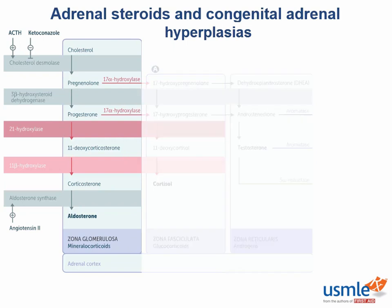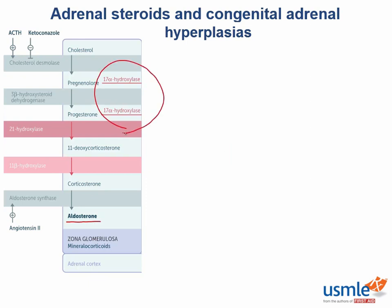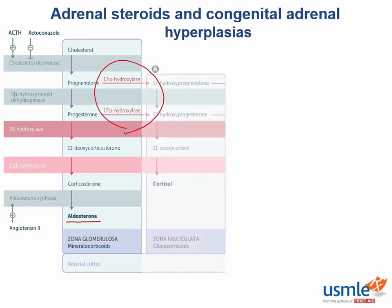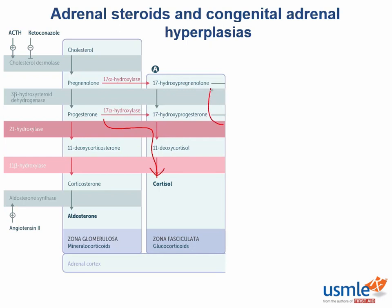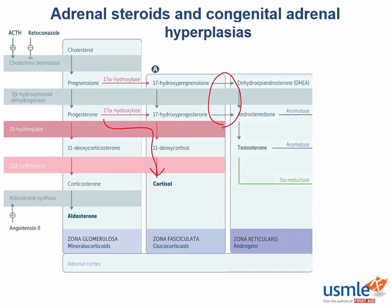The glomerulosa layer has all the right enzymes to synthesize aldosterone, but it lacks the 17-alpha-hydroxylase required to synthesize cortisol. The fasciculata layer's hydroxylase works fast enough to route steroid production pretty much exclusively to cortisol, but it lacks the 17-20 lyase that the reticularis layer uses to synthesize DHEA, androstenedione, and to some extent testosterone.